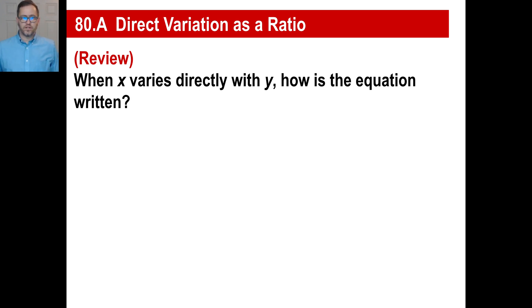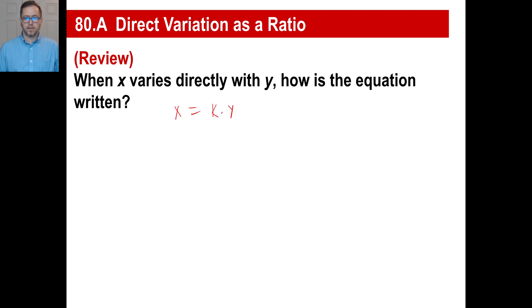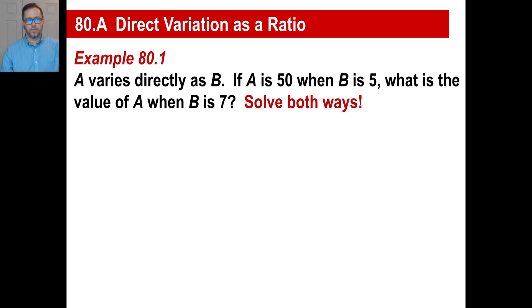Hey y'all, let's take a look at ratio. Let's do an oldie first. When x varies directly with y, how do we write the equation? If you remember, x varies directly with y, we go like this: x varies directly, there's your constant k, times the y. That's how you write the equation. You figure out what k is, apply that to the new numbers, and go from there.